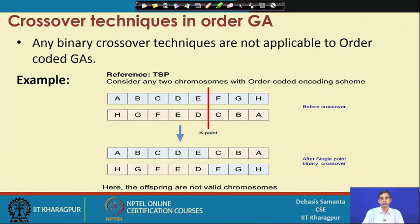The sequence is important. For example, in the Travelling Salesman Problem, all values in the chromosome should not be repeated and they should follow a certain sequence. This means if we follow binary crossover techniques, these are in terms of symbols, so no real values are involved — that is why we cannot apply the real-coded GA.